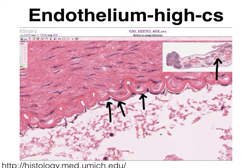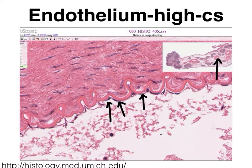This is a cross-section of a blood vessel, as you can see on the whole slide here as well. We can actually see the simple squamous epithelial layer, better called the endothelium, in blood vessels much better in a longitudinal view. So let's do that next.